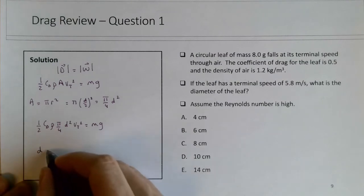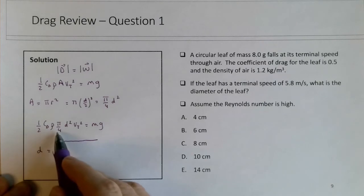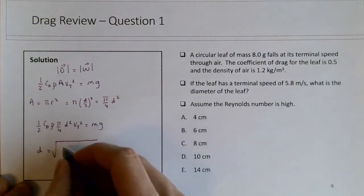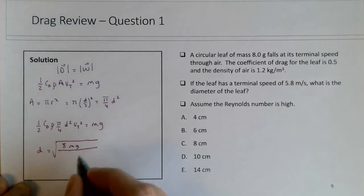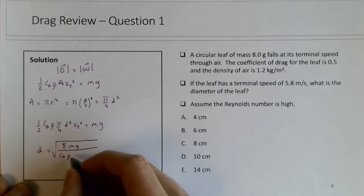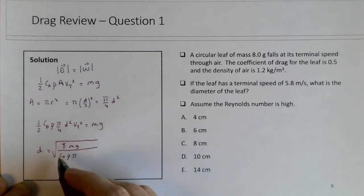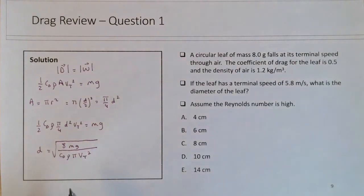There's going to be a square root here. The 2 times 4 will give us 8, so multiply both sides by 8. We'll have 8mg on the top, and then I'm going to divide across by cd, divide across by rho, divide across by pi, and divide across by vt squared. That should leave us with exactly what we need to solve for d.